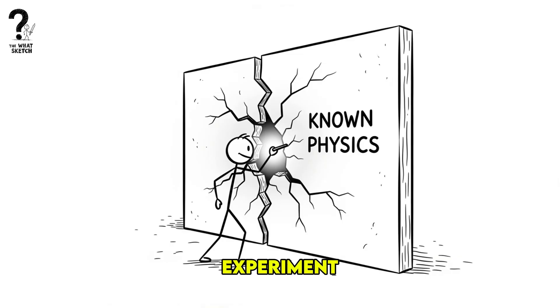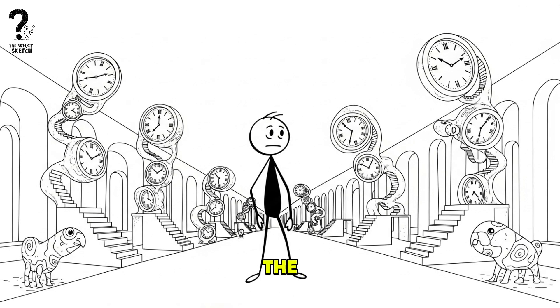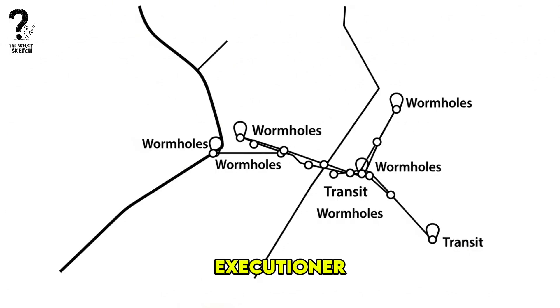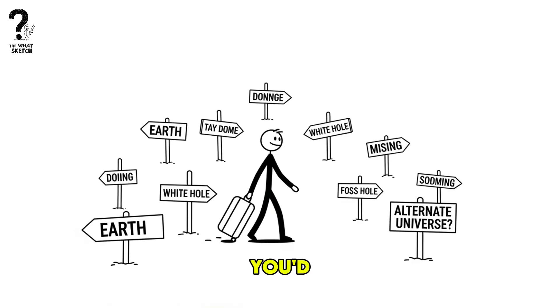The journey through a wormhole is just a thought experiment for now, but it reminds us that the universe is far stranger than we can currently imagine. A black hole might not be an executioner, but a bizarre transportation system. The real question isn't just if you'd survive, but where you would end up.